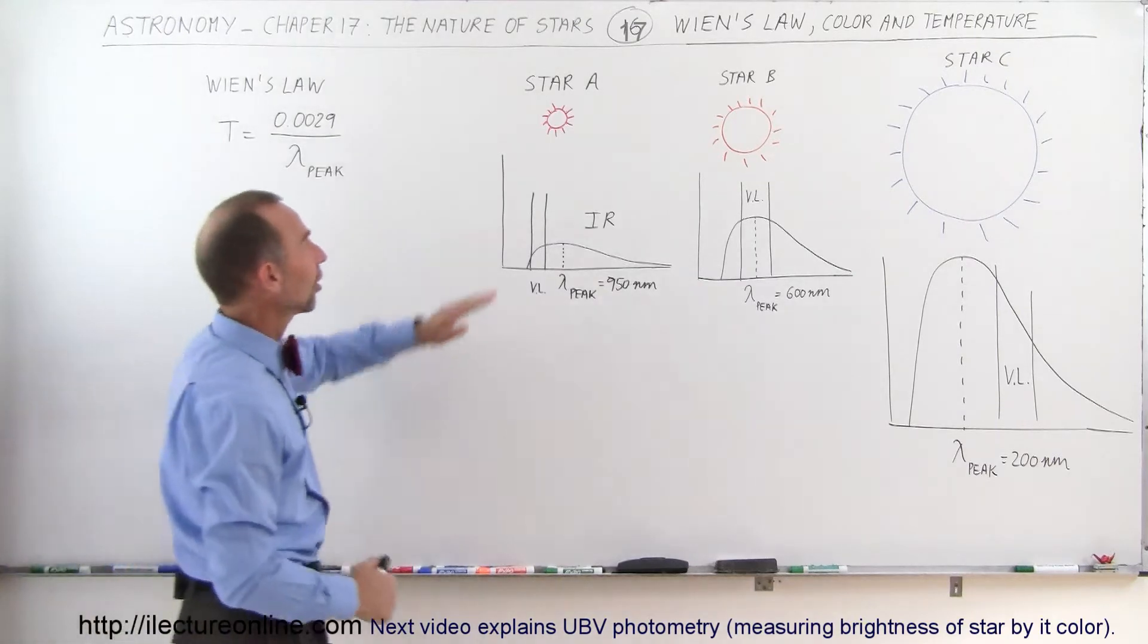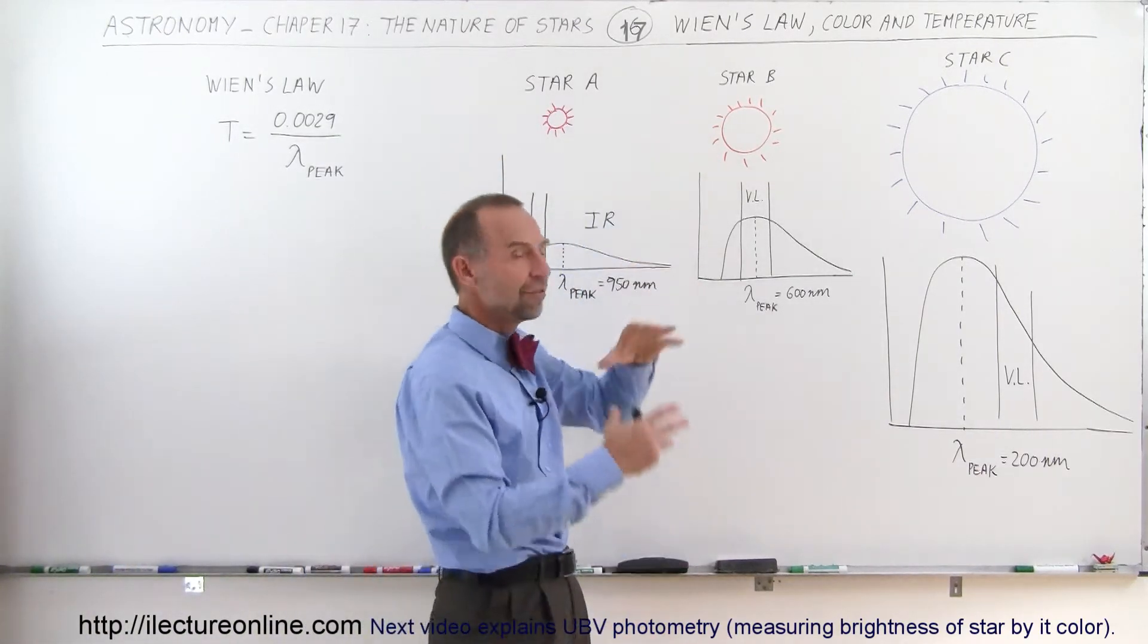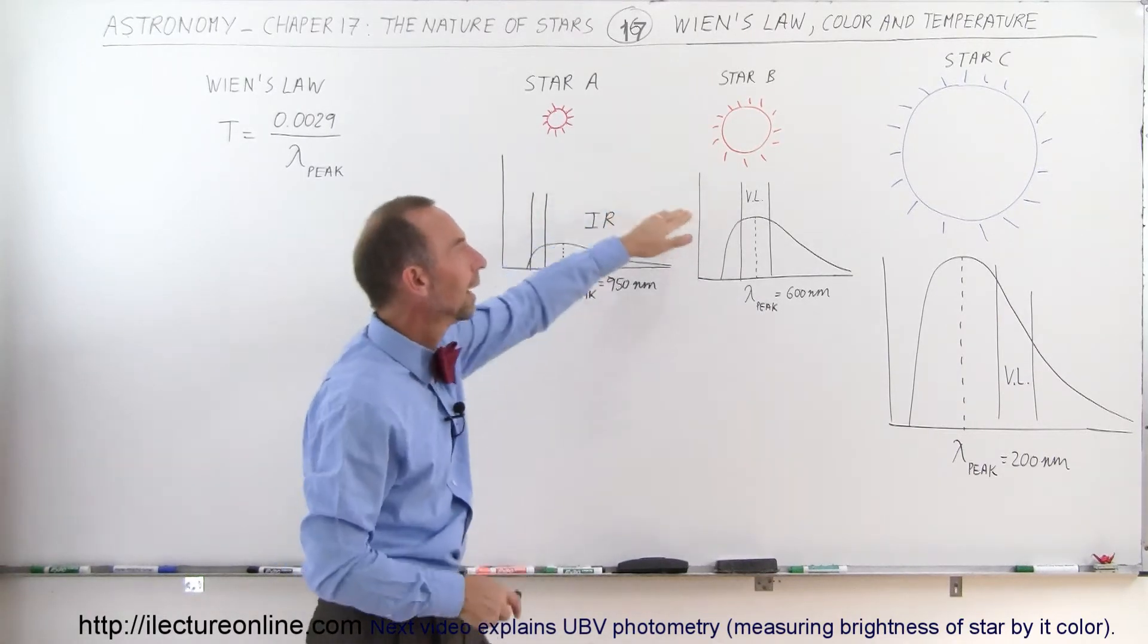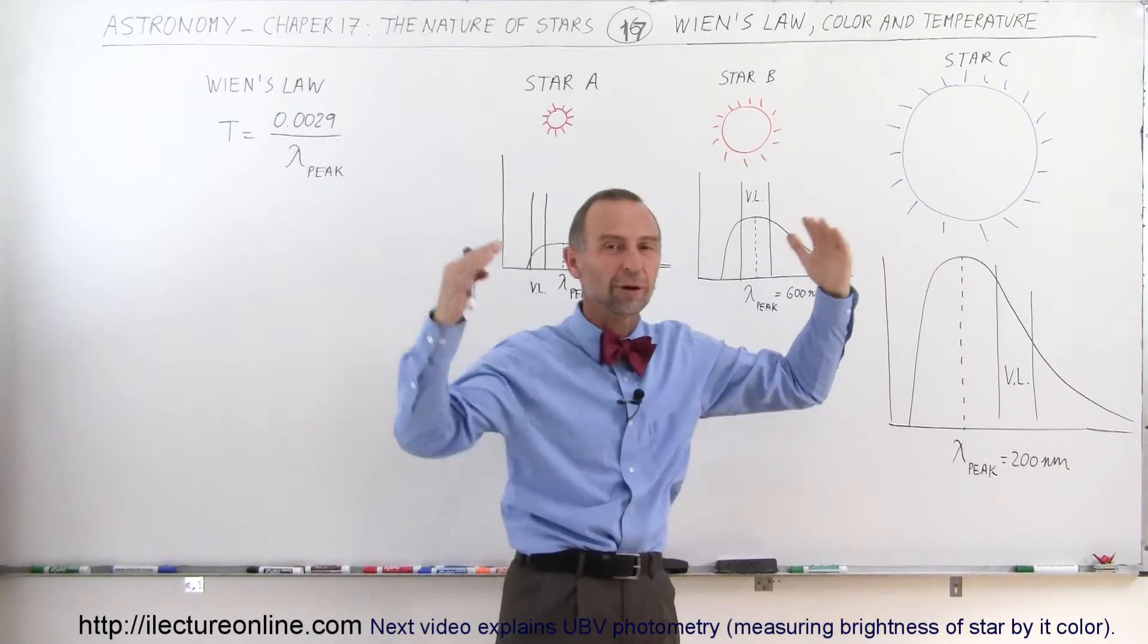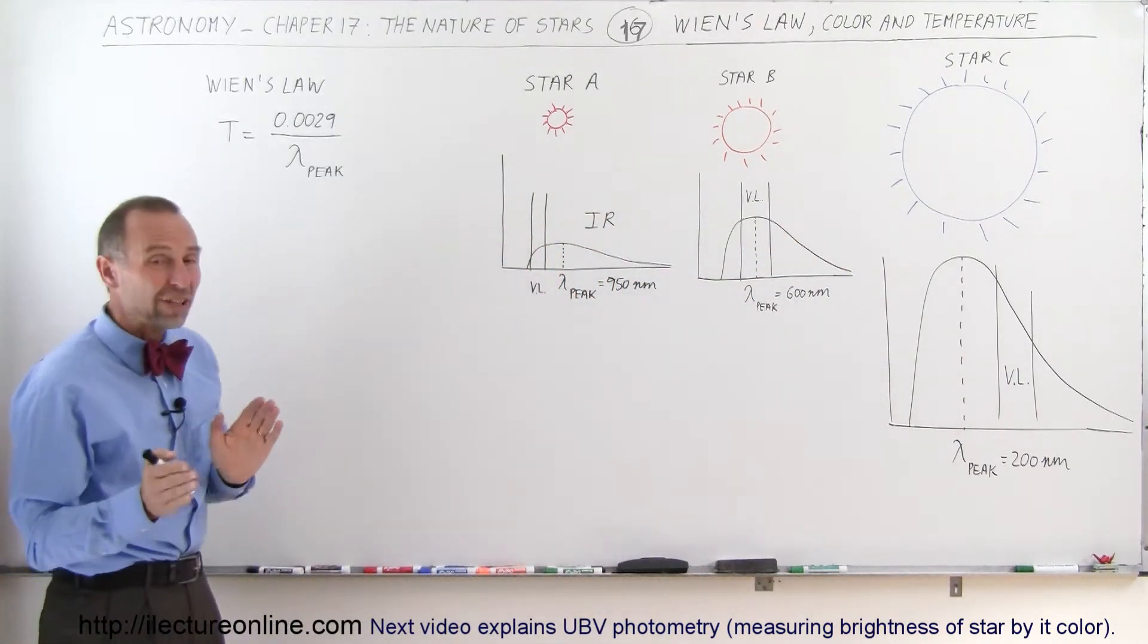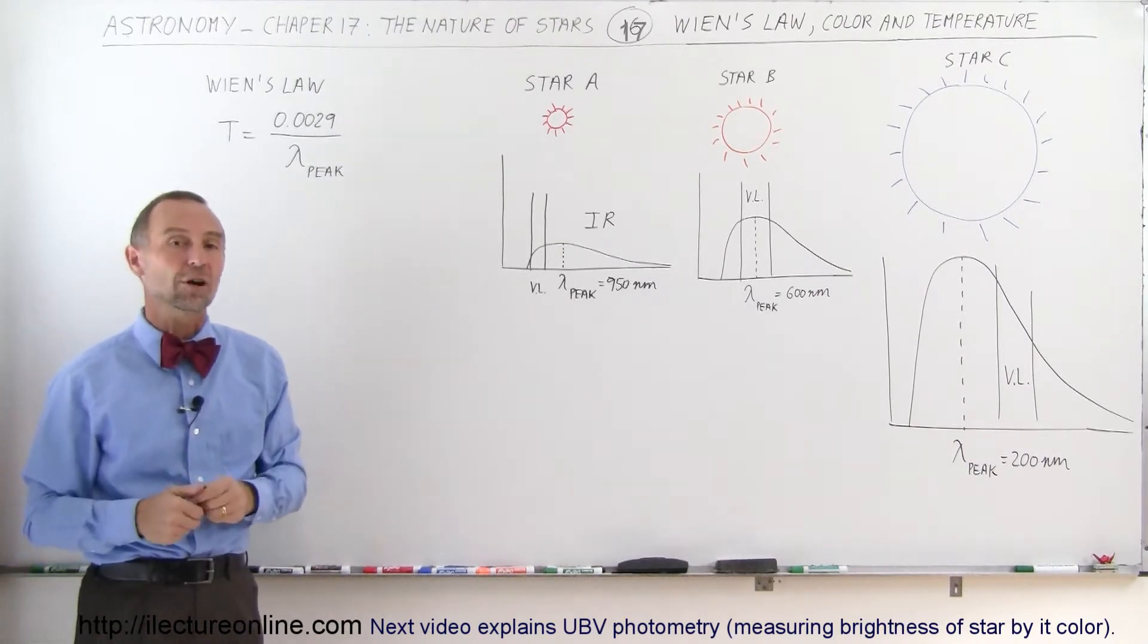Let's say we have three stars: Star A, a very small reddish star; Star B, larger like our Sun, yellowish-orange; and Star C, a very big blue star. The colors are associated with their temperatures, and the temperatures are associated with the types of radiation we get from the stars.